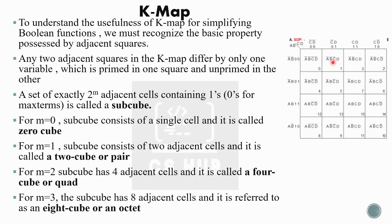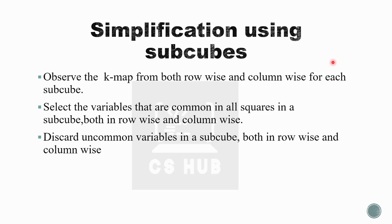Using subcubes, we can simplify Boolean expressions. Observe the Kmap both row-wise and column-wise. For each subcube, select the variables that are common in all squares of that subcube, both row-wise and column-wise. Discard the uncommon variables — if a variable is zero in one cell and one in another within the same subcube, discard that variable. Only retain variables that are the same across all squares.